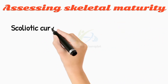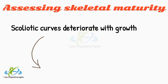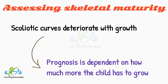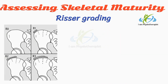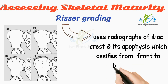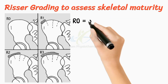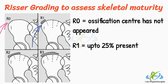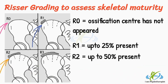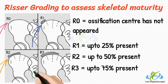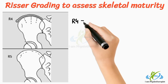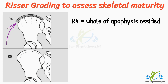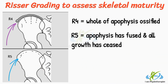Assessing skeletal maturity: scoliotic curves deteriorate with growth, and the prognosis is often dependent on how much more the child has to grow, judged by examining appropriate radiographs and assessing sexual maturity. Risser grading of skeletal maturity uses radiographs of the iliac crest and its apophysis, which ossifies from front to back. R0: ossification center has not appeared. R1: up to 25% present. R2: up to 50% present. R3: up to 75% present. R4: up to the whole apophysis is ossified. R5: the apophysis has fused and all growth has ceased.